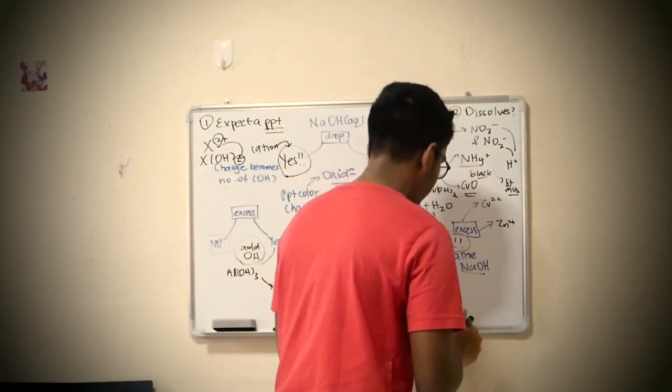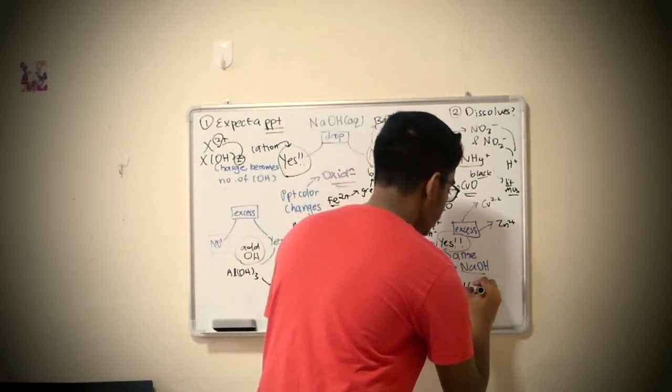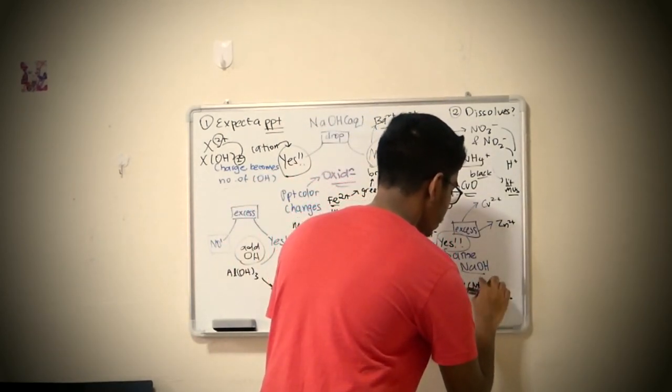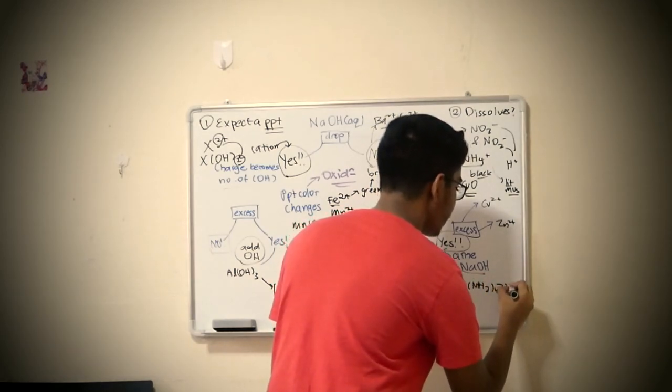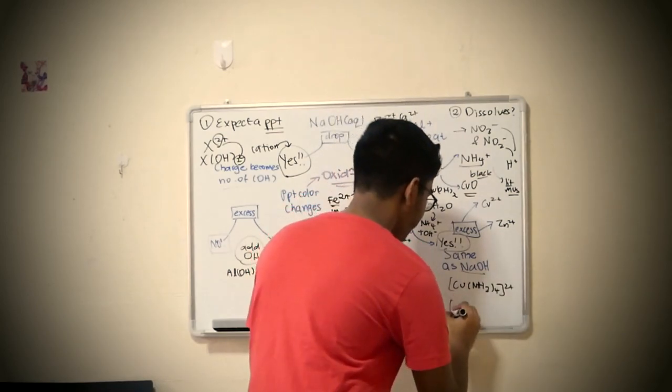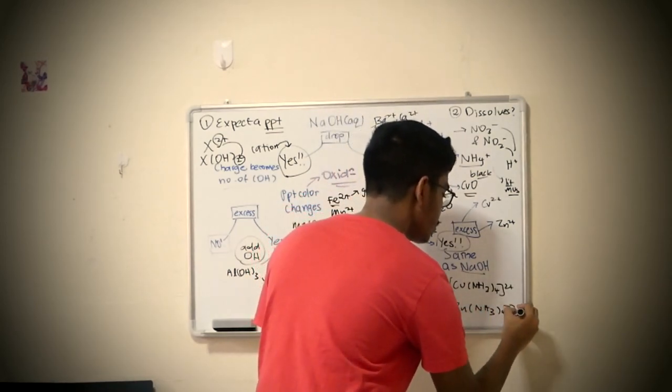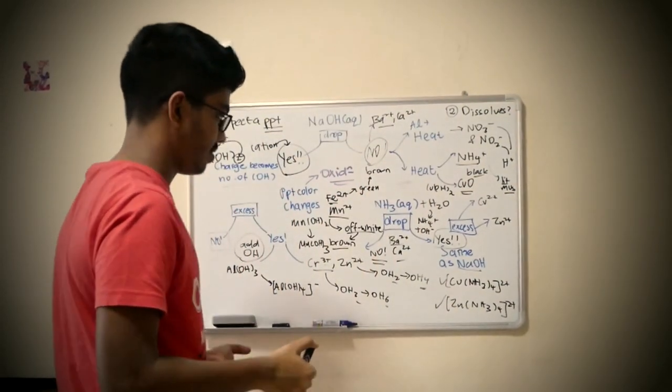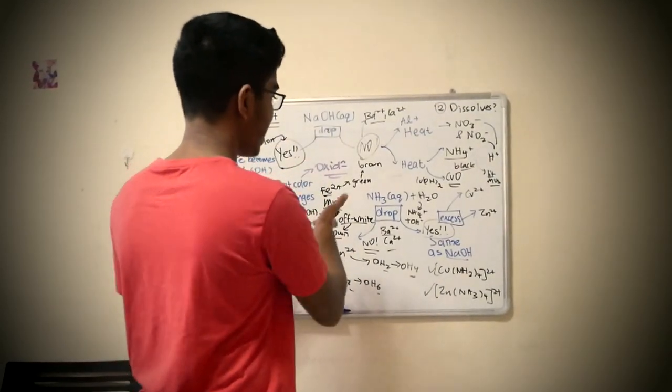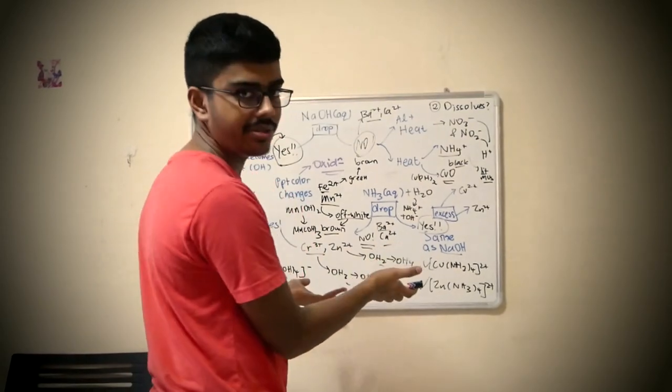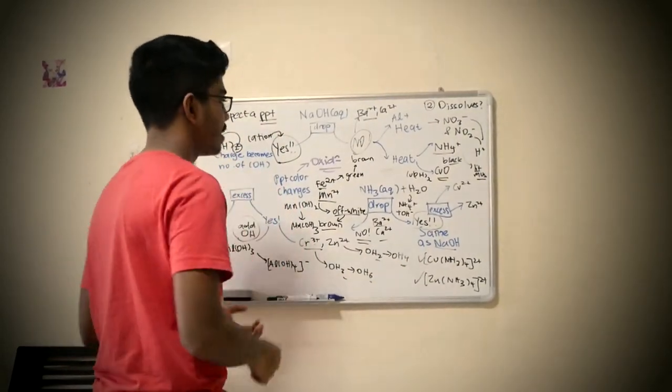So what are the complexes that are formed? Cu(NH3)4 2+ and Zn is the same thing. And pretty much that's it. That's it for NaOH aqueous and NH3 aqueous. Next we're going to proceed to sodium carbonate. And this entire picture is in the description for your own reference.